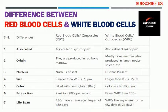Let's get into today's video. We have 17 bases for comparison. The first basis for comparison is the other name — talking about red blood cells, they are also called erythrocytes. Talking about white blood cells, they are also called leukocytes. The second basis for comparison is the origin.